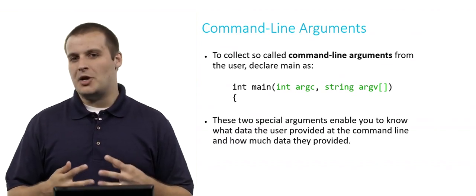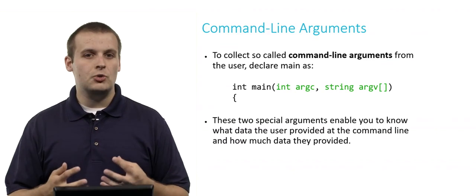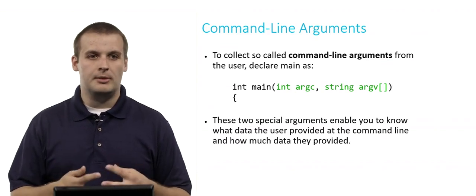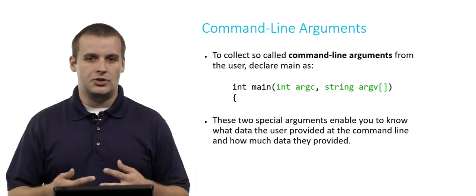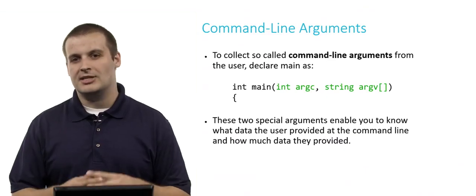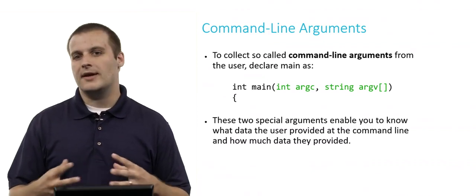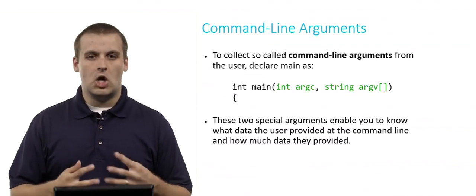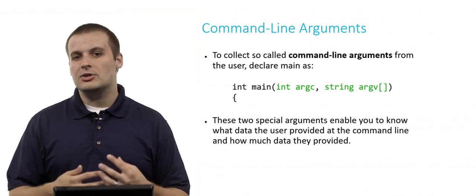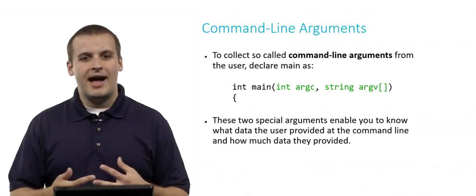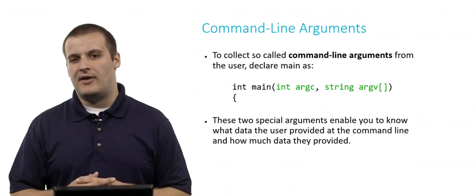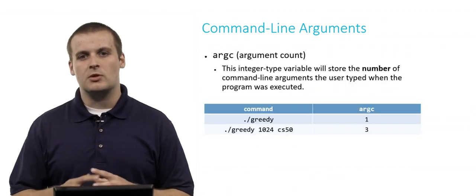So what does that mean? Well, we are passing in two parameters or arguments or inputs to main. One, an integer called argc, and the other is an array of strings. It's not an individual string, it's an array of strings. And these two arguments, argc and argv, enable you to know what data the user has provided at the command line and how many things they provided at the command line. Pretty useful things to work with.